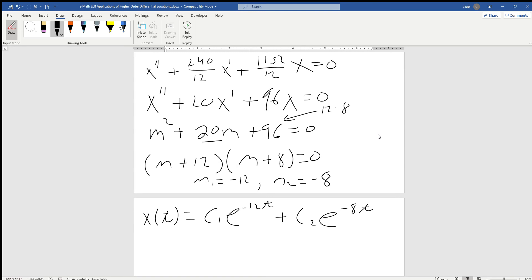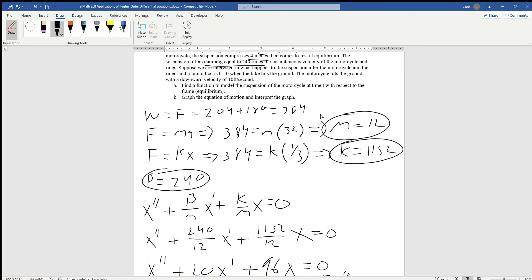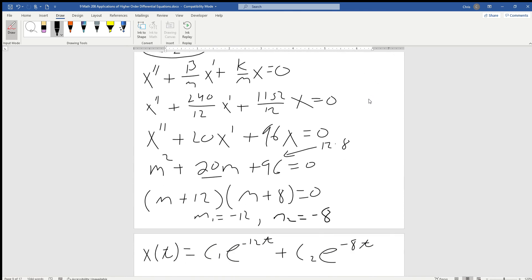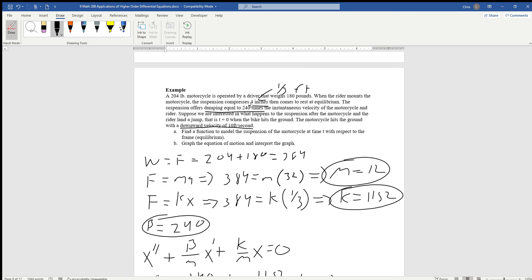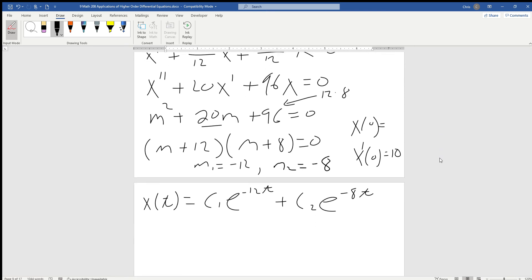We need to solve for c1 and c2, so we're going to have to get some initial conditions. One that's really easy is that we have a downward velocity of 10 feet per second, so x prime at 0 equals positive 10 because we're going downward. Remember that this doesn't start at equilibrium. When somebody sits on it, the suspension compresses by a third of a foot below equilibrium. That means x at 0 is going to be a third, positive because we're below equilibrium.